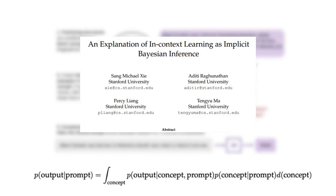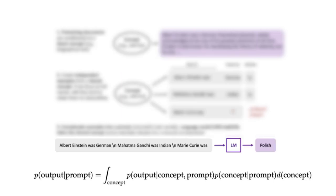If we look at an example, we have the following from Xie's paper. The prompt is: Albert Einstein was German, Mahatma Gandhi was Indian, Marie Curie was, and the output is Polish.